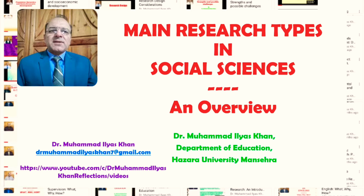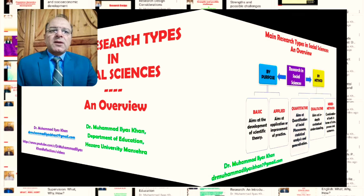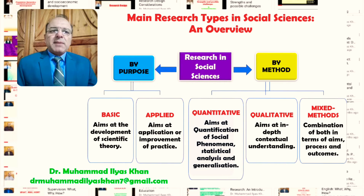This session is aimed at giving a brief overview of the main research types in social sciences. Generally, the main research types in social sciences have been categorized into two main categories: research types by purpose and research types by method.